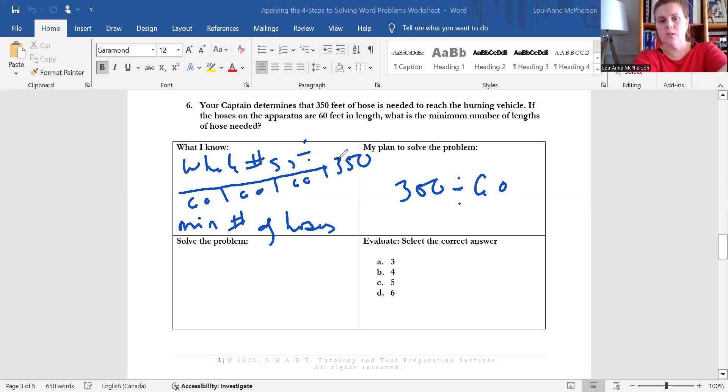If you are doing the NTN math test, this is a question that you should be answering in your head, just to get that mental math practice. Otherwise, go ahead and start to solve on paper. So we're going to do that now, 350 divided by 60. Now, to solve this problem, use estimation to get there quicker.